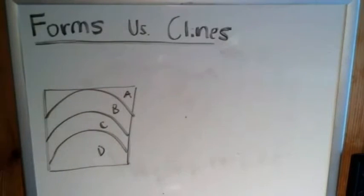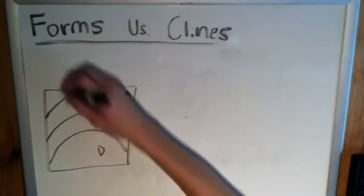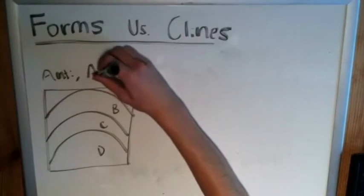And once again, just by relative dating, we can say D is the oldest, followed by C, followed by B, followed by A. So, antiformal anticline. We'll just abbreviate that with anti-anti.